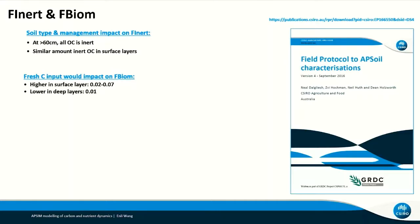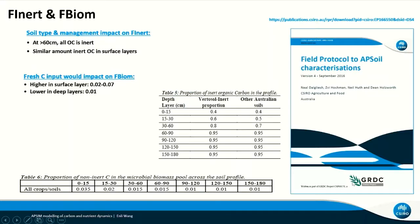For F-BOM, it is affected by fresh carbon input, so it is higher in surface layers and lower in deeper soil layers. The two tables show some indicative values for F-inert and F-BOM for typical soils in Australia, from the document shown on the right.